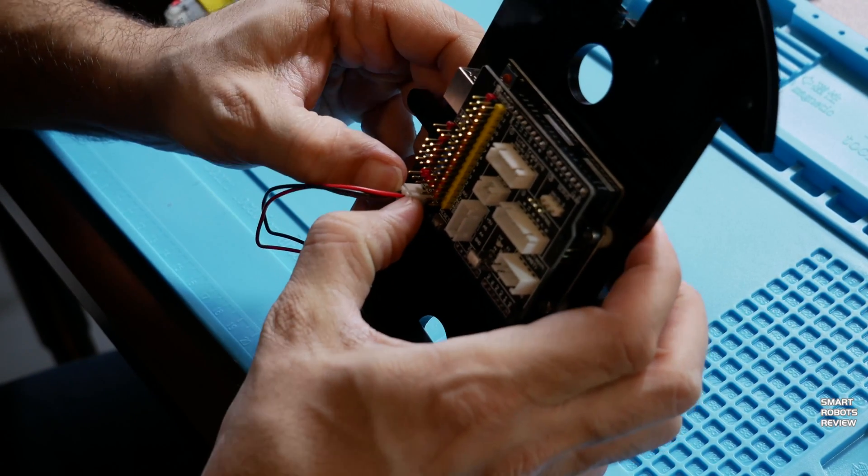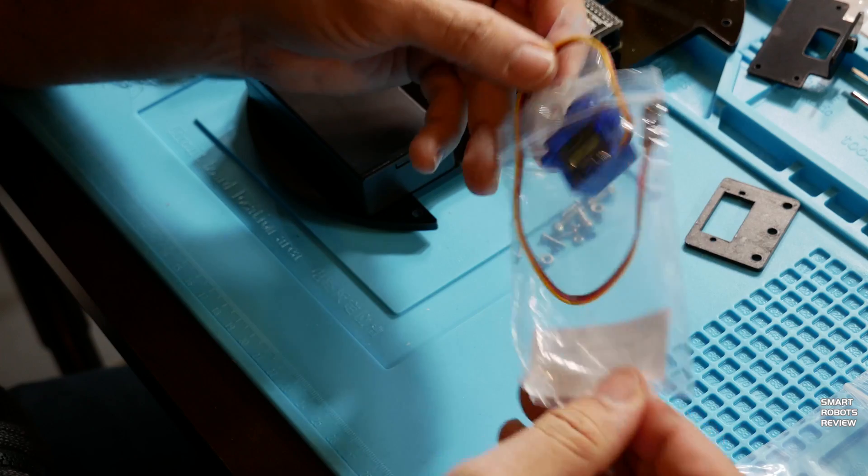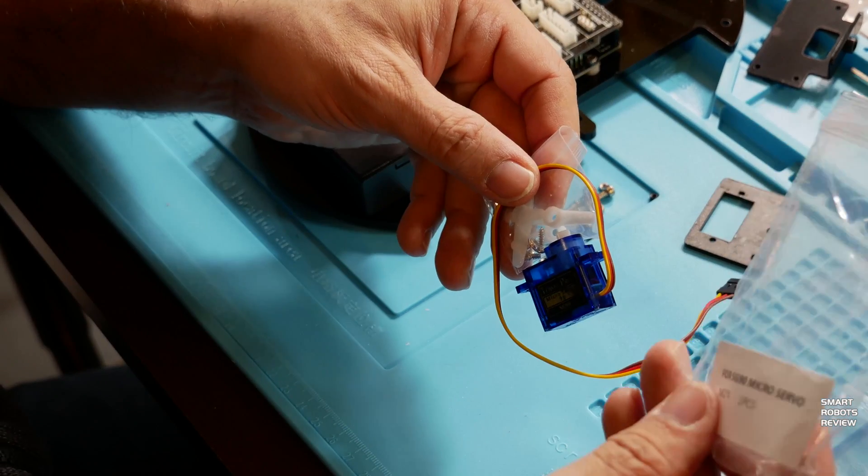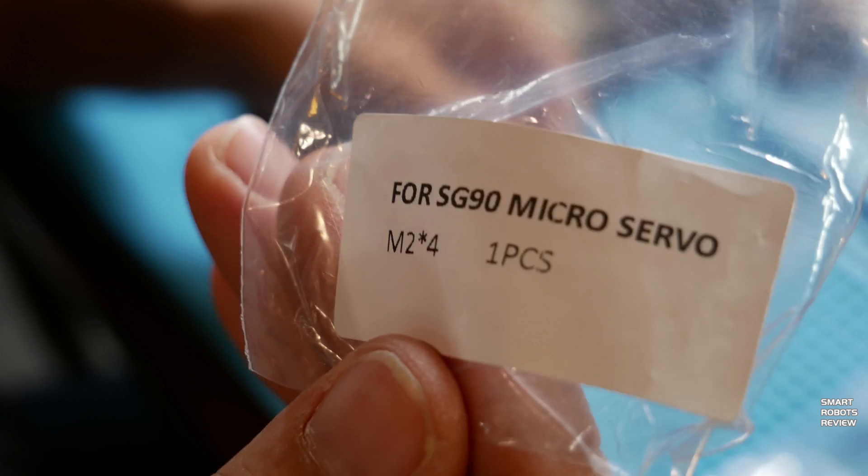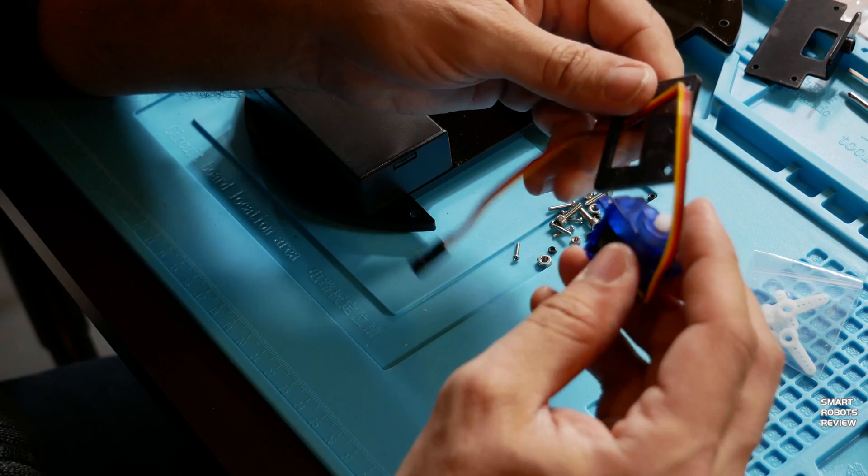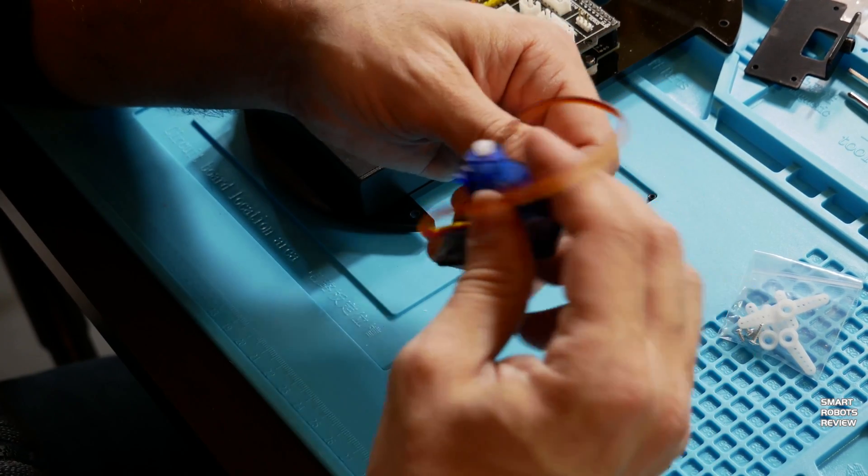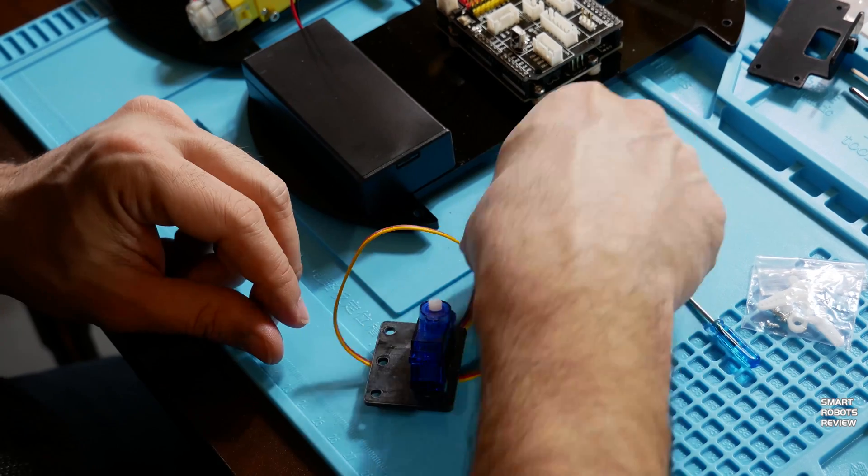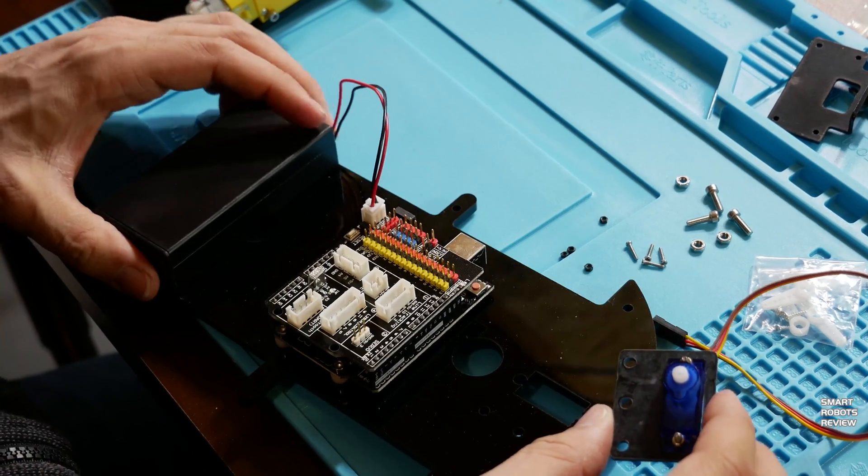Next we're gonna be installing the ultrasonic sensor so let's get those parts out. This is the micro servo DC motor that will be rotating the ultrasonic sensor. We're gonna be attaching the ultrasonic sensor on this motor and before that we have to make sure we install this correctly.